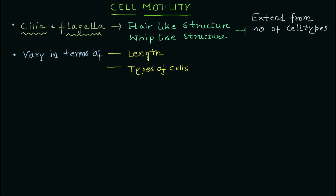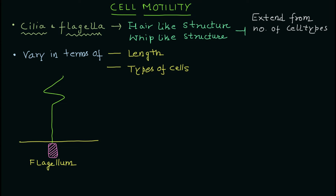There is a difference in length between flagellum and cilium, and they are also present in different numbers in different cell types. Looking at the general structure of flagellum: there is a basal body, from which the elongated part of the flagellum extends. One part of this extended structure is a passive region where minimum motion occurs, and then there is the active part where propeller-like motion takes place.